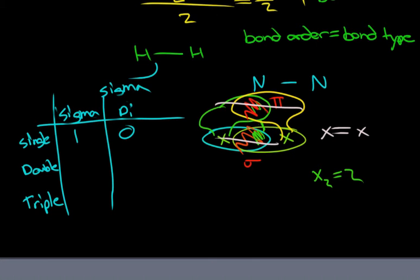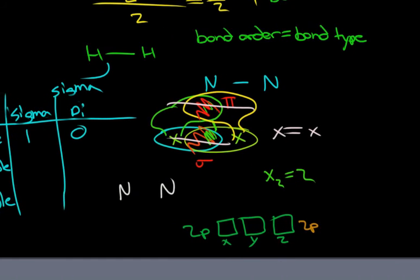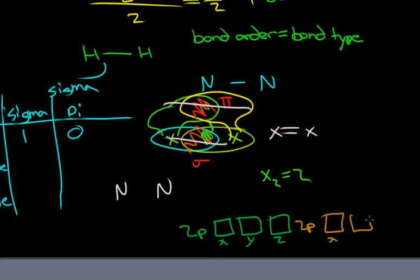So what about nitrogen? Nitrogen on the periodic table is in its 2P shell. Which means that it has its 2PX, 2PY, and 2PZ. And we have two nitrogens, so I'll do another one. So 2PX, Y, and Z. And nitrogen will only be able to fill up a half shell.